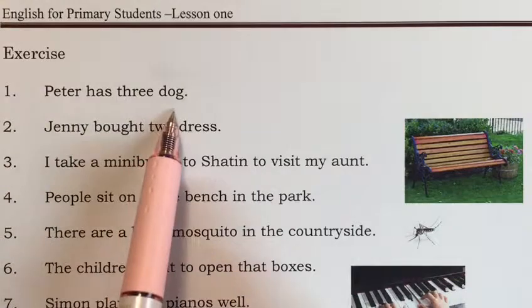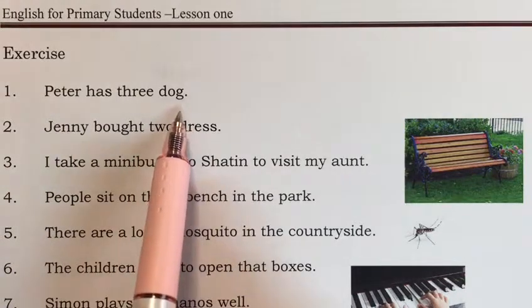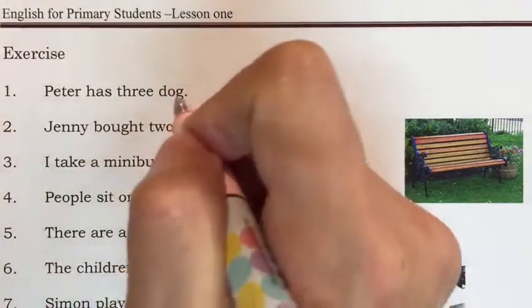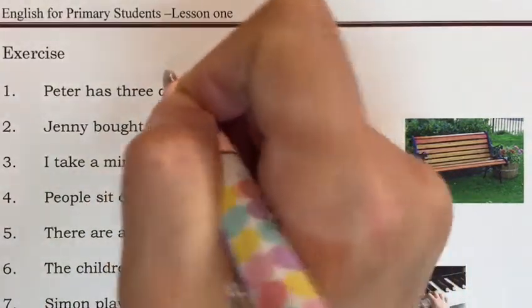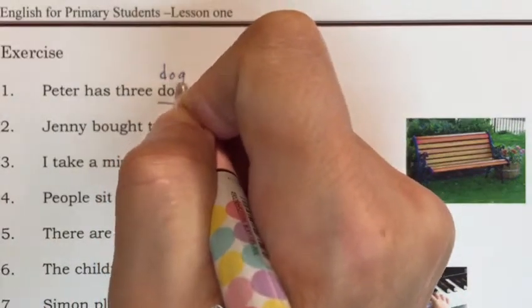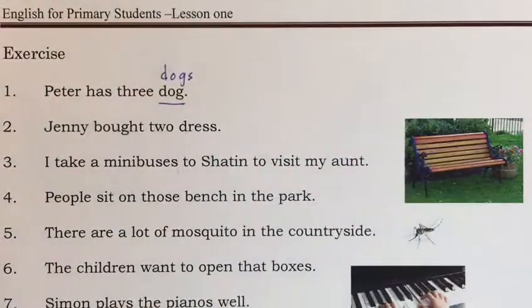Peter has three dog. You'll know 'dog' — this word is not correct. Three dog — we'll change it. Dogs. Add an S. Three dogs.